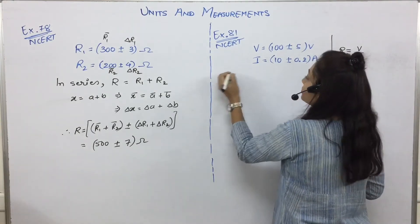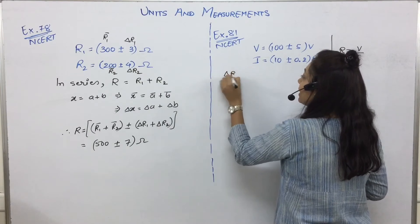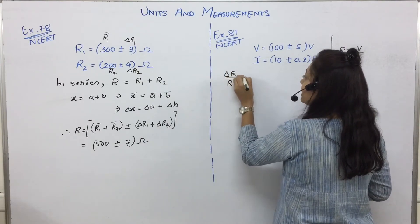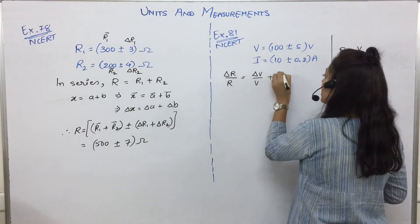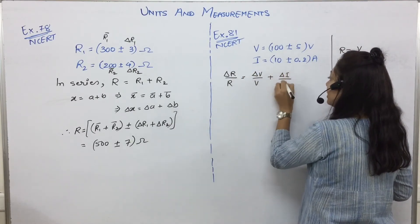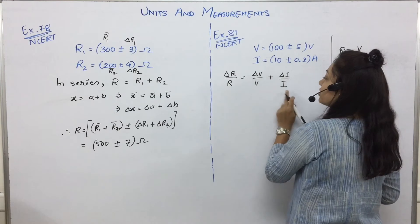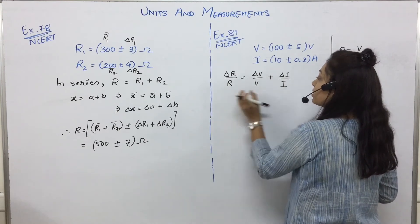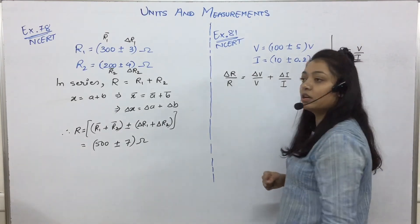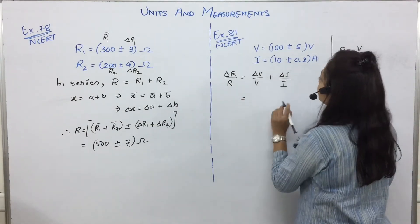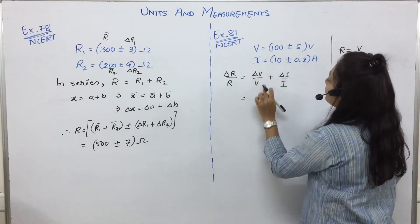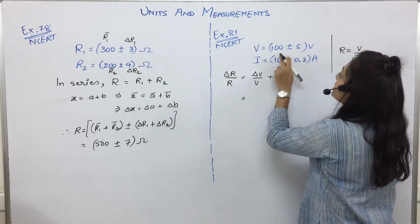We can say delta R by R is equal to delta V by V plus delta I by I. Individual fractional errors ka summation will be the fractional error of the resultant physical quantity. Clear? Okay, how to write this? Delta V by V, delta V is this, V is this.